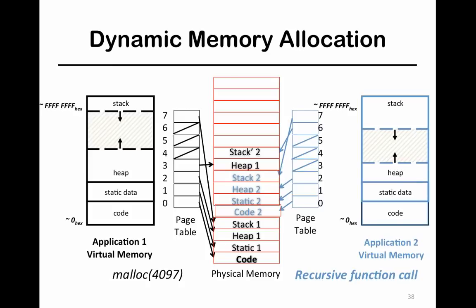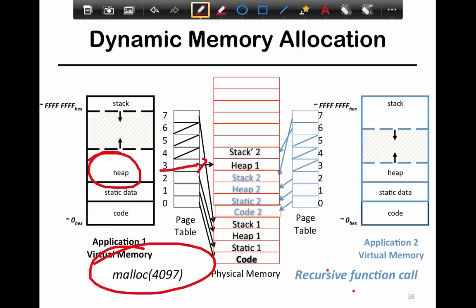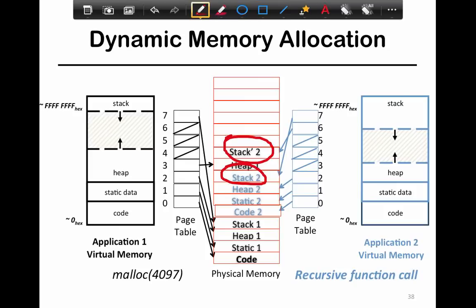In this case, for example, you can see stack prime of two being able to run. You've got stack two which is running the first function, and then the next one comes along and you can allocate another stack to a different place in the system.